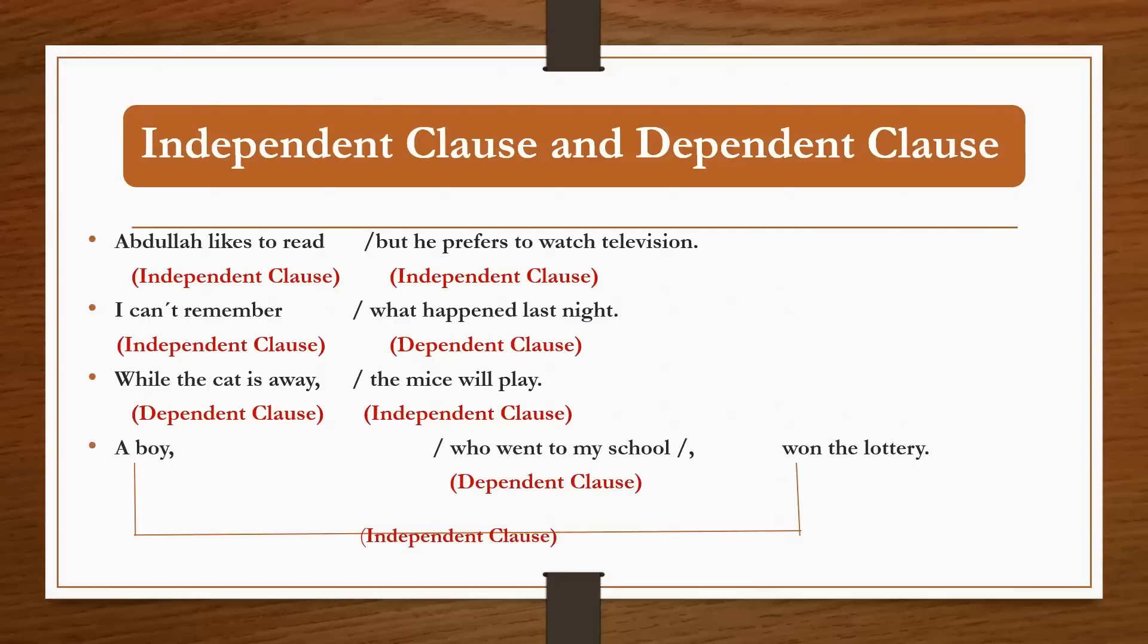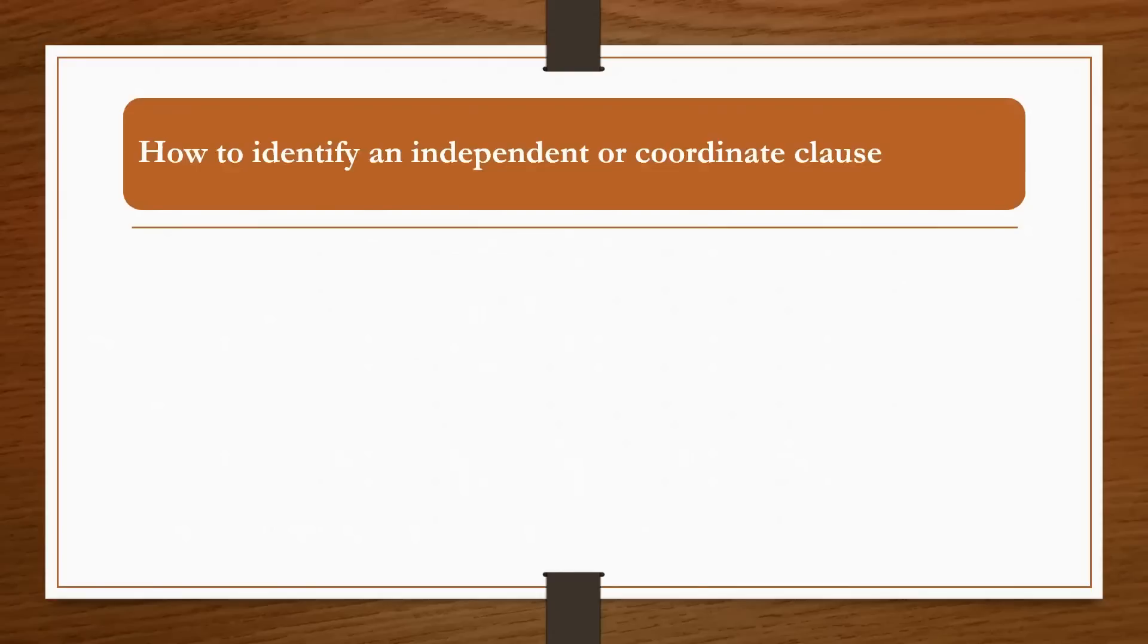Sometimes this structure also appears. Dependent clause of the adjective clause type. In this structure, one clause can be embedded within another clause. The first example: a boy won the lottery - this is an independent clause.